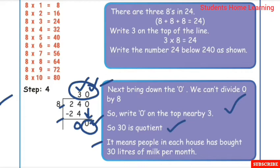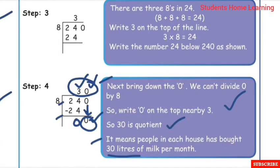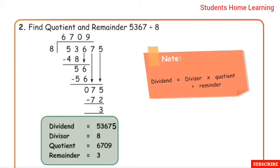Note: Generally when we do addition, subtraction and multiplication, we start from the units place. But in division, first we choose the digit of the highest place value — here it is the digit in the hundreds place. Here 2 is smaller than 8, so take the next digit also, that is 4 in the tens place. Now divide 24 by 8 to find the quotient and remainder.